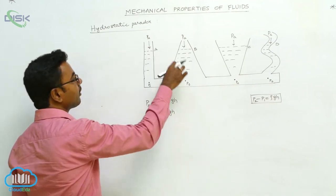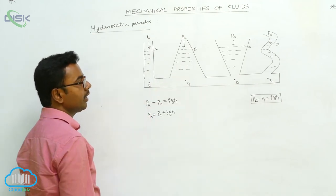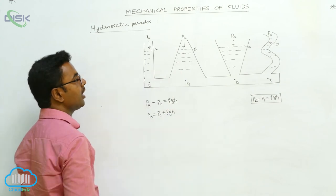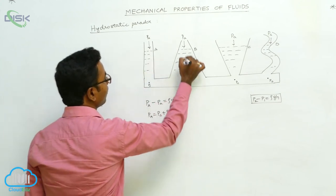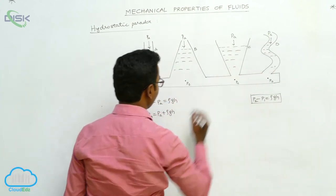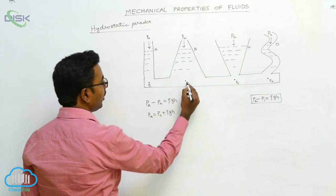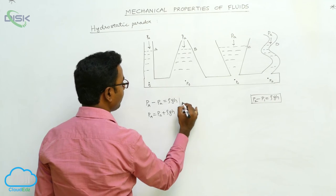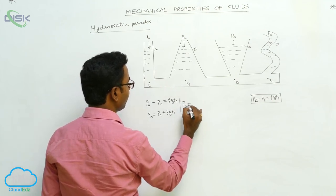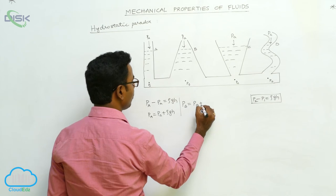If we pour the liquid, it rises in all containers to the same height, so height H is same for all. So this PA plus ρgh is same for all. If we find the pressure at point B, that is PB, PB also equals PA plus ρgh.